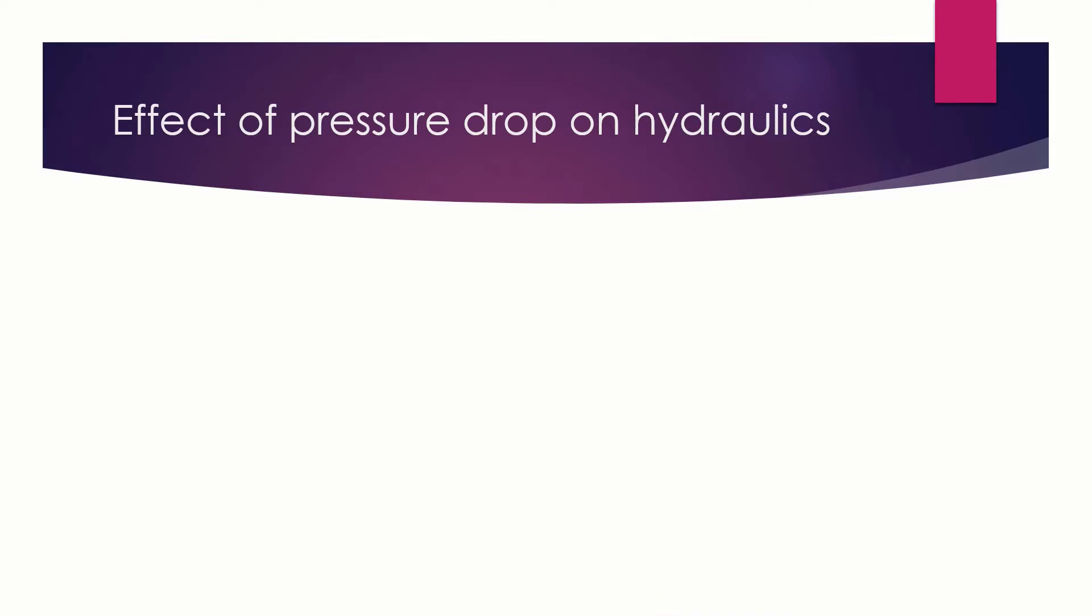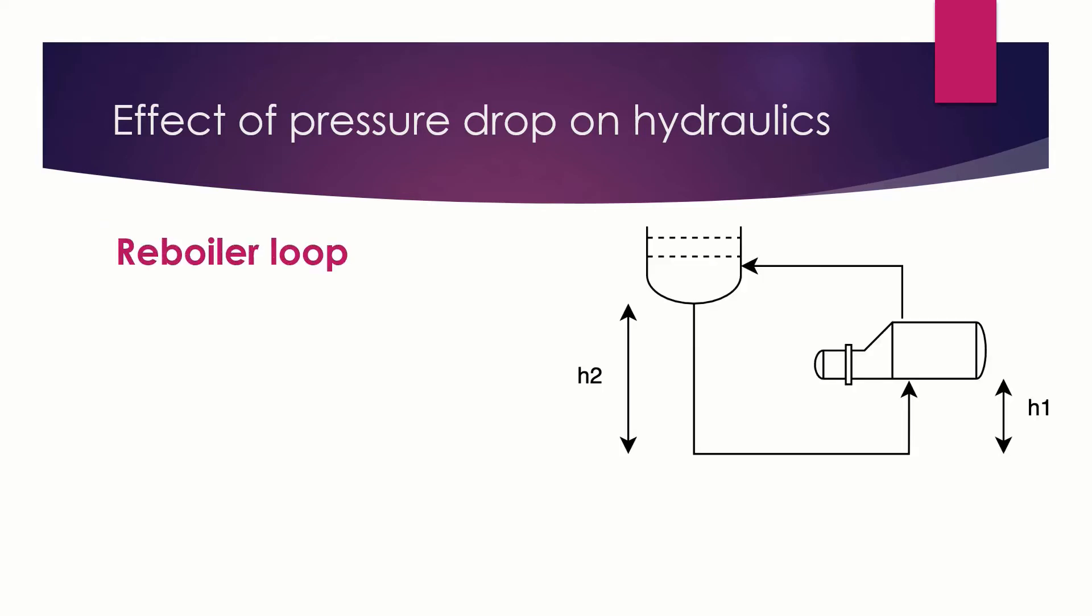An example of firm approach and how the line pressure drop or the pipe pressure drop affects the hydraulics: let's take an example of the reboiler loop. The pressure difference between the reboiler bottom and the returning point to the tower is approximately zero.